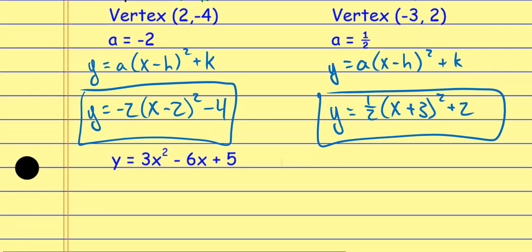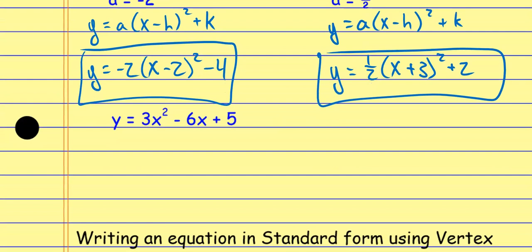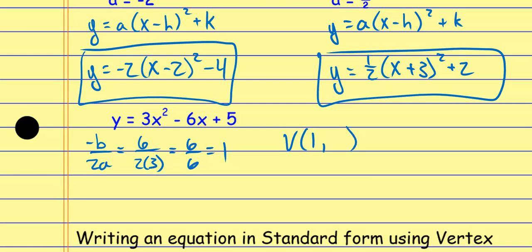This one is in standard form and I want to write it in vertex form. To do that I need two things: the vertex and the a value. When we're in standard form, I find the vertex by doing the opposite of b over 2a — this gives me the x value for the vertex, which is my h. Here the opposite of b is 6, over 2 times a which is 3, giving me 6 over 6, which is 1. That's the x value for the vertex — that's my h. Now to find the y value, I plug that 1 back in.